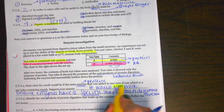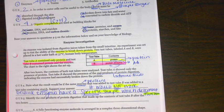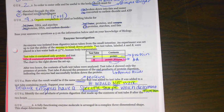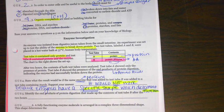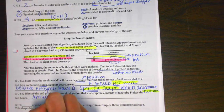So it would not work. Again, that has to do with specific shape and also shape determines function. Identify the end products of protein digestion that made up the contents of test tube B after two hours. We already answered that. That's saying, what are the building blocks of protein? And the building blocks are going to be amino acids.